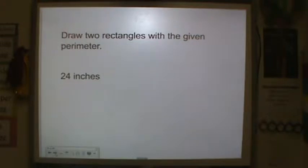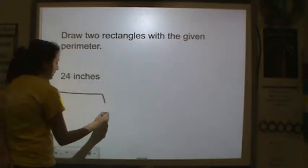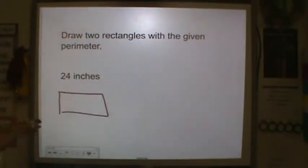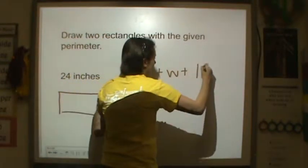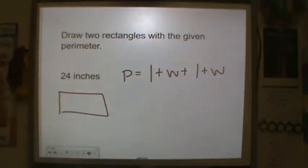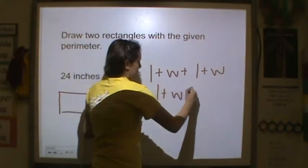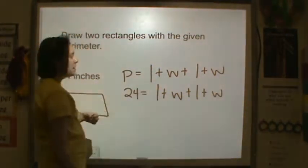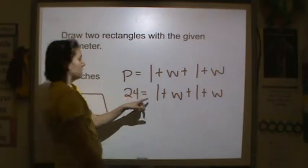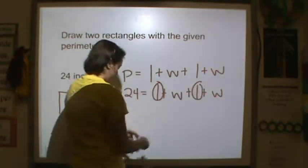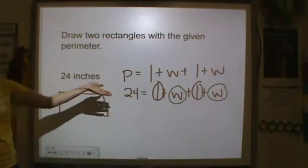Draw two rectangles with the given perimeter. My perimeter is 24 inches. I know the perimeter is the length plus the width plus the length plus the width. So 24 is equal to length plus width plus length plus width. Remember, your lengths and widths have to be the same. You need two lengths and two widths that are the same number that add up to 24.